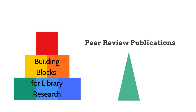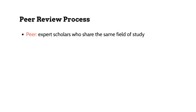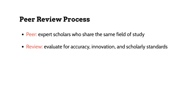This video explains the peer review publication process. Peer refers to expert scholars who share the same field of study. They are most often university professors who teach and conduct research. Review refers to what these expert scholars contribute to the peer review process — they evaluate other scholars' research publications for accuracy, innovation, and scholarly standard.